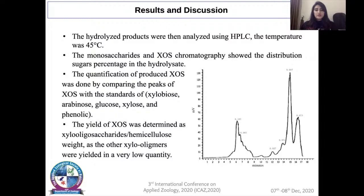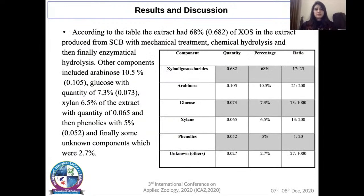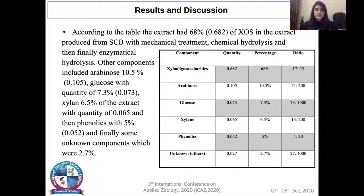The extract had 68.2% xylooligosaccharides produced from sugarcane bagasse after mechanical, chemical, and enzymatic treatment. Other components included arabinose at 10.5%, glucose at 7.3%, and phenolics at 5.2%, with unknown components at 2.7%.